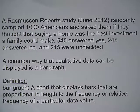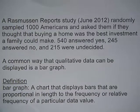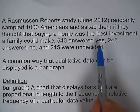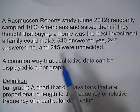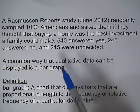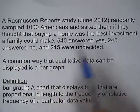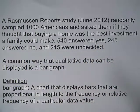540 answered yes, 245 answered no, and 215 were undecided. This is a qualitative data set because the answers yes, no, or undecided are all categories. It's not quantitative or numerical data — it is qualitative or categorical data.